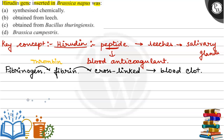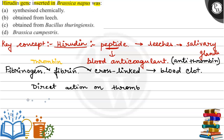The principal inhibitor here involves thrombin. Hirudin acts as an antithrombin — it inhibits thrombin. So Hirudin is a blood anticoagulant which acts as antithrombin. It acts directly on thrombin — this is called direct action on thrombin.